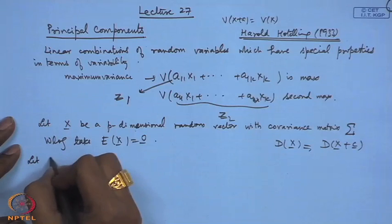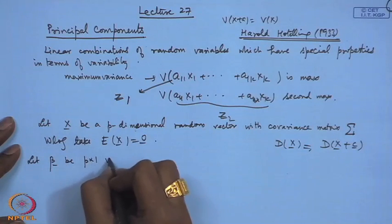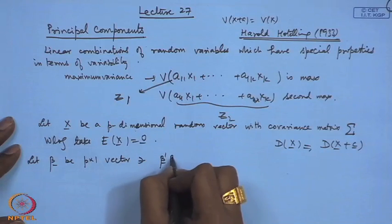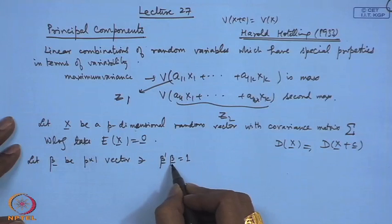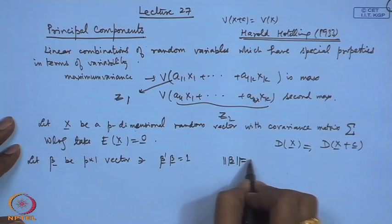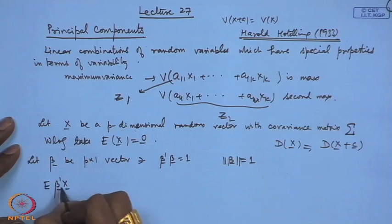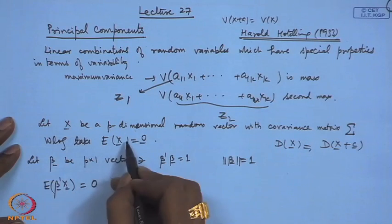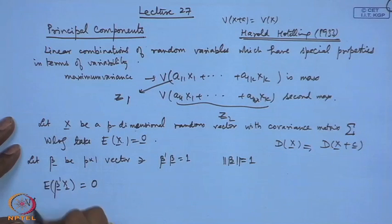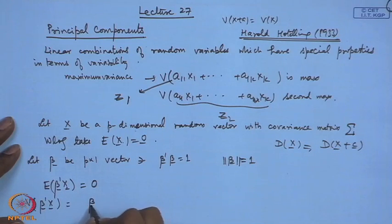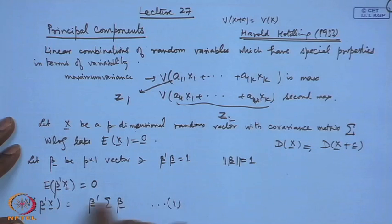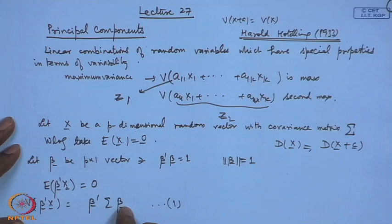Let β be a p×1 vector such that β'β = 1, meaning the norm of β is 1. I will consider normalized linear combinations. The expectation of β'x is 0 since E[x] = 0. The variance of β'x is β'σβ — if the dispersion matrix of x is σ, then the variance of any linear combination β'x equals β'σβ.